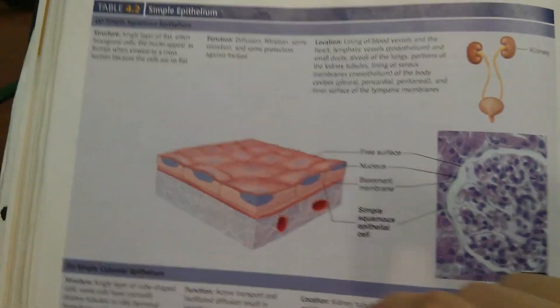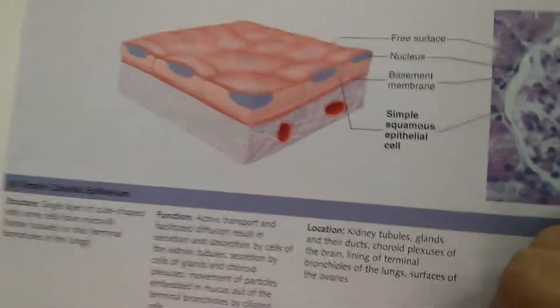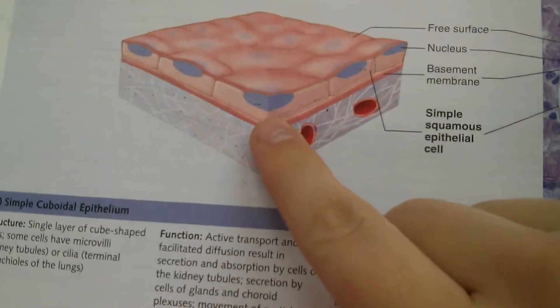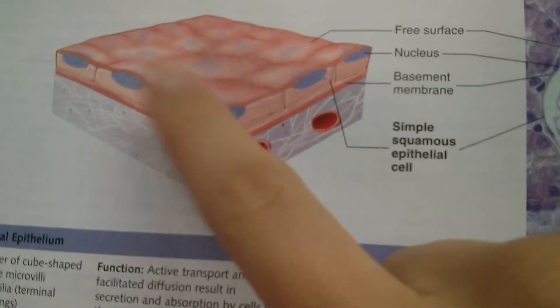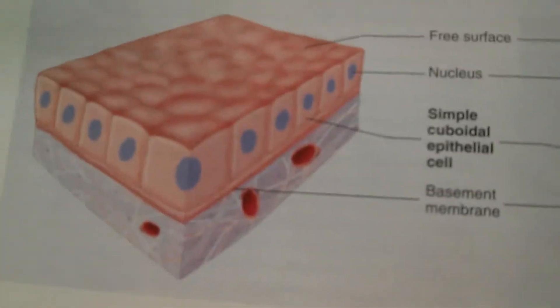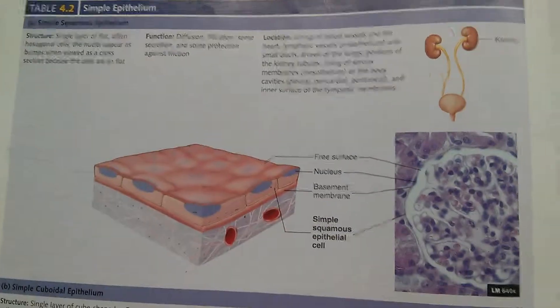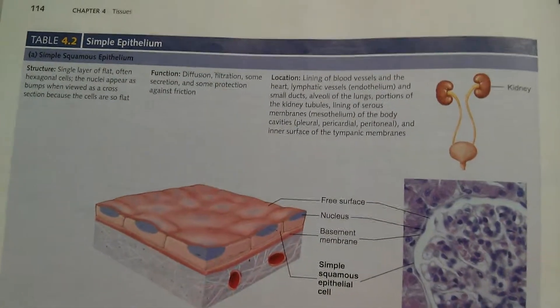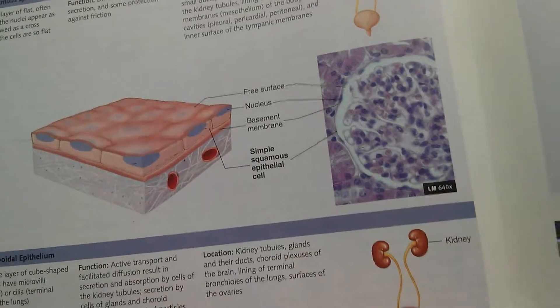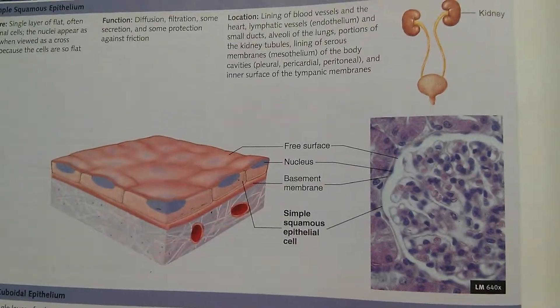In this picture here we see simple squamous, which means it has one layer of squashed or squished squamous cells. They're flat like a pancake, as opposed to these, which are cuboidal. In the body you'll find simple squamous epithelium in places that need to have high filtration.